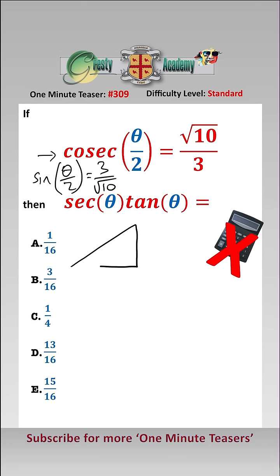I find these easiest by drawing a nice little triangle like this, where we have that here is theta over 2, which is 3, root 10, then by Pythagoras this is 1. So we know that cos of theta over 2,